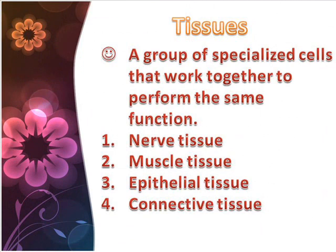There are four basic types of tissue: nerve tissue, muscle tissue, epithelial tissue, and connective tissue.